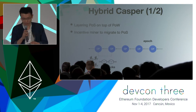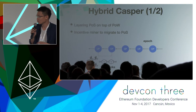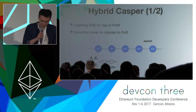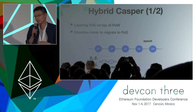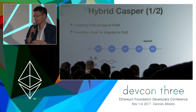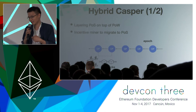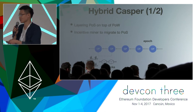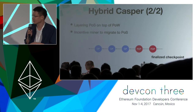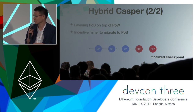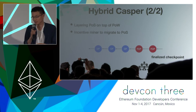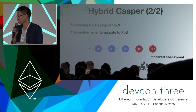We want to have a canonical chain where checkpoints get finalized one by one. The more checkpoints that get finalized, the more security the system has. The validator who votes for a particular checkpoint can receive a reward if that checkpoint gets finalized.